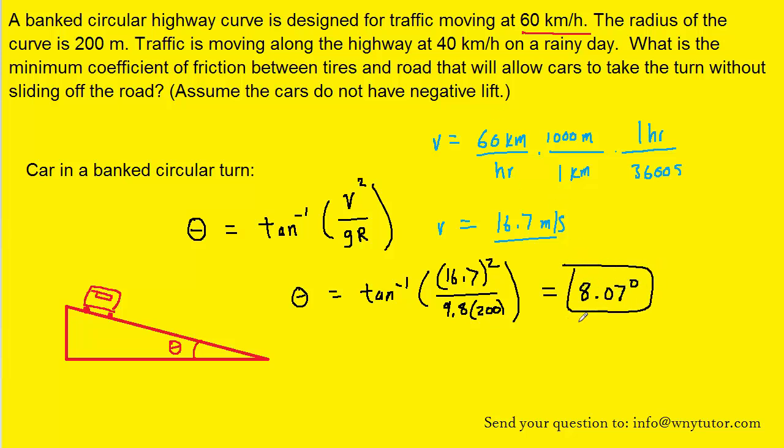Now let's keep in mind that angle is necessary under ordinary conditions. But in the question we have extraordinary conditions - a rainy day, and traffic is moving at only 40 kilometers per hour. We have to convert 40 kilometers per hour into meters per second. That speed becomes 11.1 meters per second.